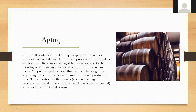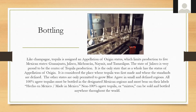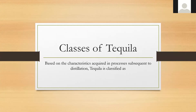Just like champagne, tequila is assigned an appellation of origin status limiting production to those five Mexican states. Jalisco, of course, is the center of tequila production — it's the only state that as a whole has DAO status. It's considered the place where tequila was first made and where the standards are defined. The other states are only permitted to grow blue agave in small, defined areas.